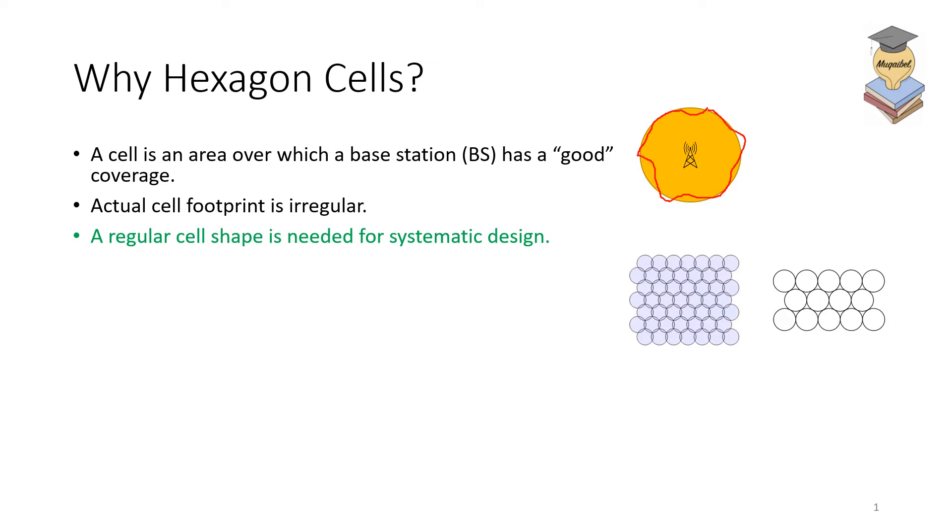A regular cell shape is needed for mathematical convenience, for systematic design, because we want to have a generic understanding. An intuitive shape would be the circular shape. This is intuitive because the power will get dissipated as we go away from the isotropic radiator in a kind of a sphere. So in 2D, that is a circle.